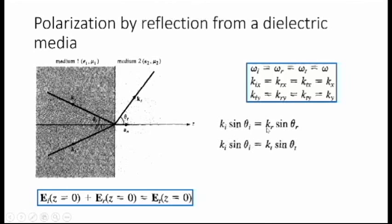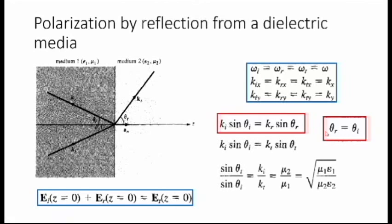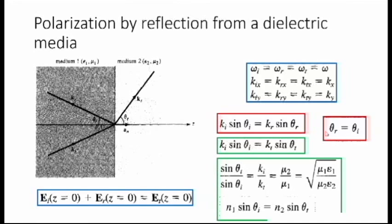From the second and third conditions we end up getting a key relation. These two lines help us relate the incident angle with the reflected angle and transmitted angle. The first line gives us a relation between incident angle and reflected angle. The second line gives us a relation between incident angle and transmitted angle. The incident angle and reflected angle are equal because propagation constant ki equals kr since they are in the same medium. However, ki does not equal kt because kt is in medium 2. That is why the relation between theta_i and theta_t is different — this leads us to Snell's law.